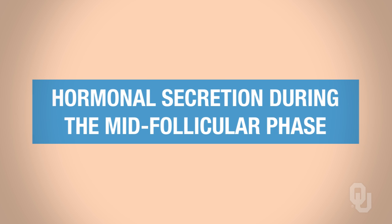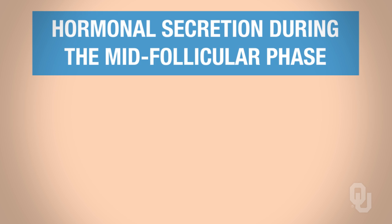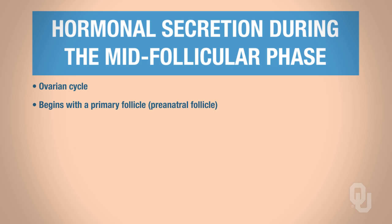Let's get into some more detail. We're going to focus on the mid-follicular phase of the ovarian cycle. This mid-follicular phase is going to begin with a primary follicle — also known as a pre-antral follicle or pre-antral stage — and will end with the dominant follicle.